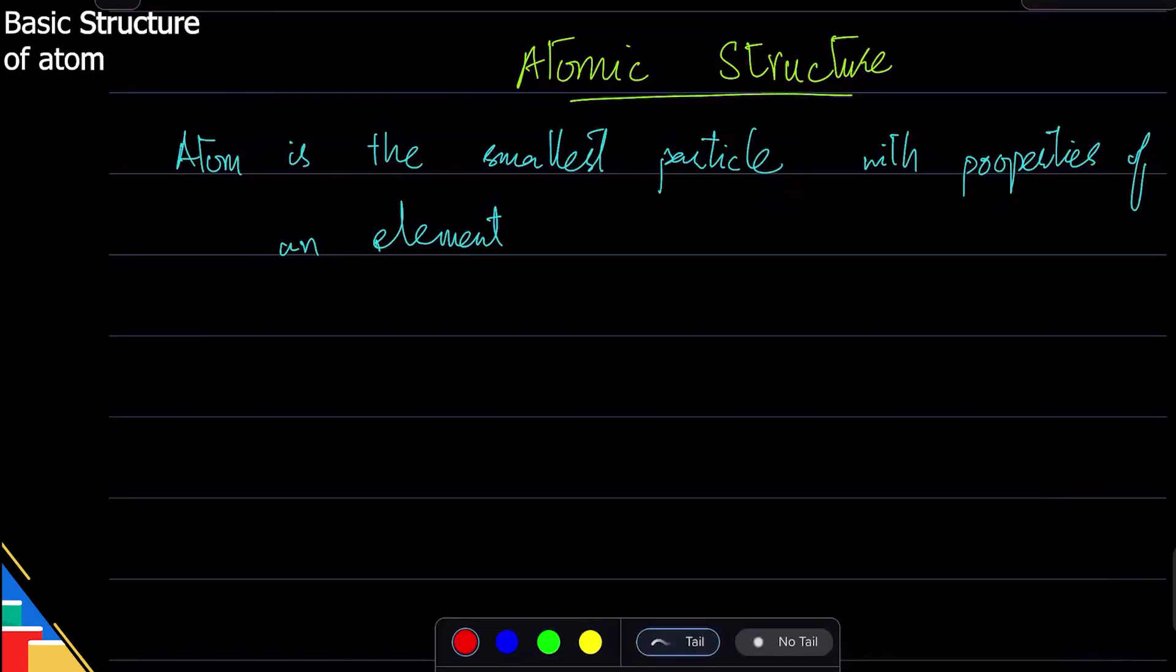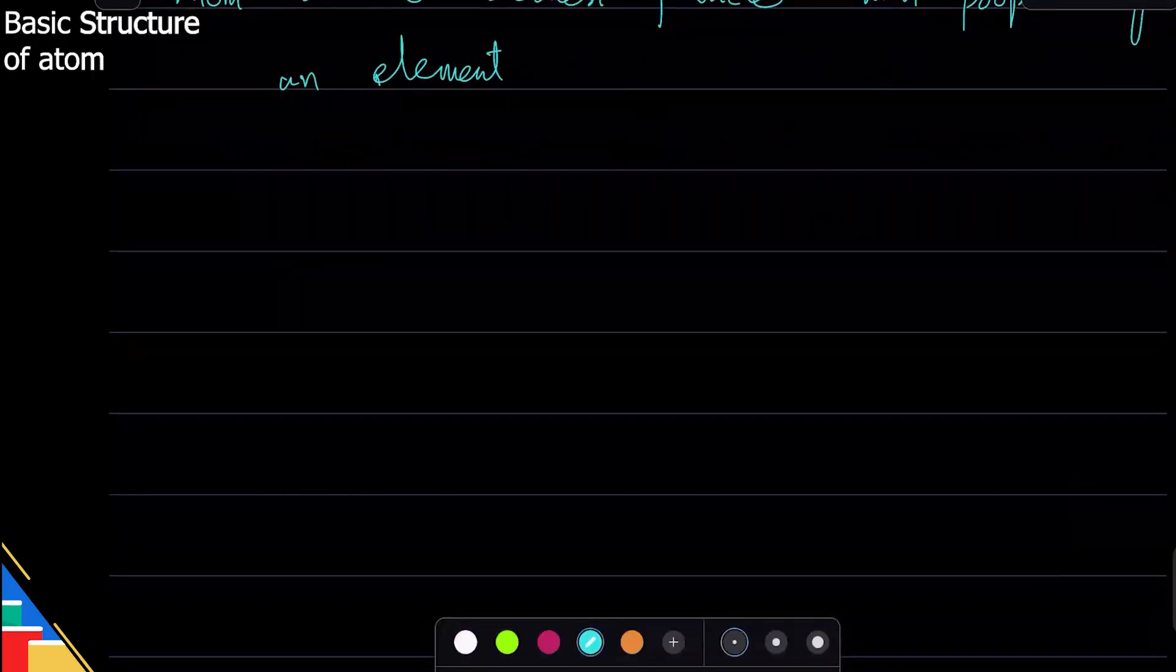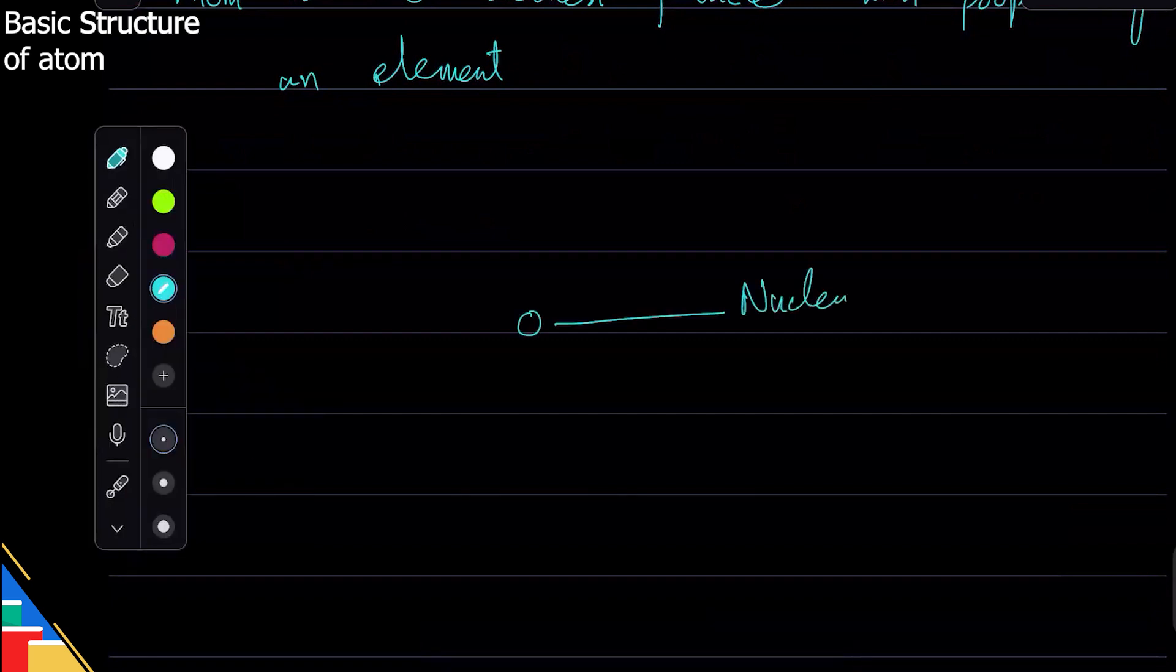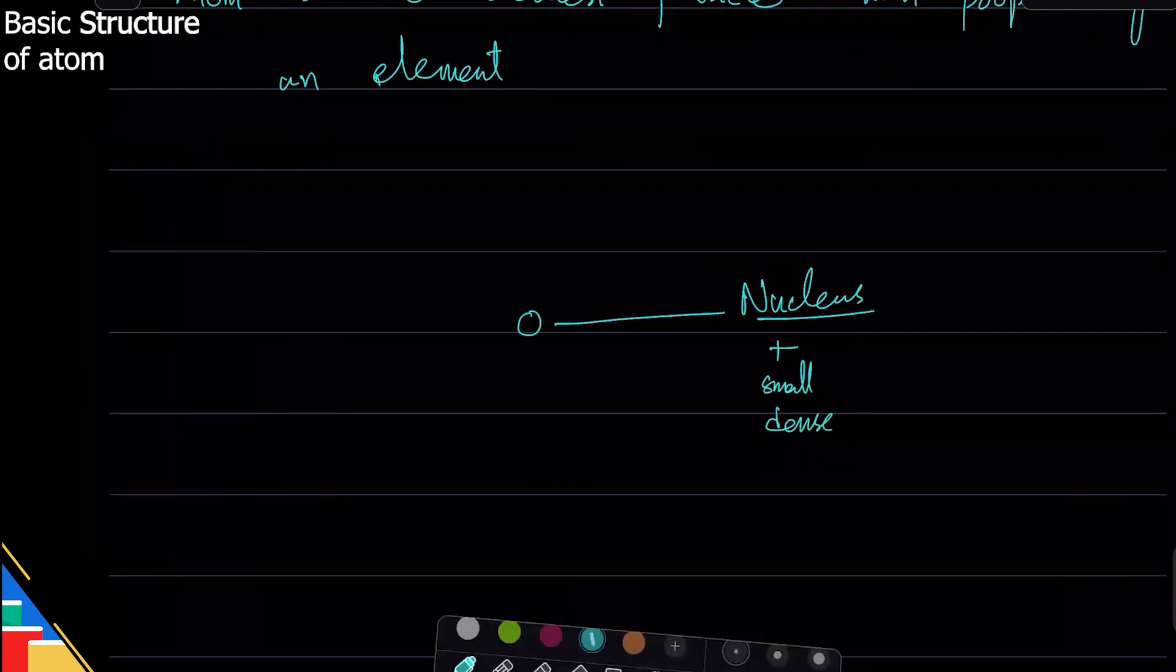The basic structure of the atom is really simple. You have a nucleus in the center. That nucleus is positive, it is small, it is dense, which means all the mass of the atom is there.